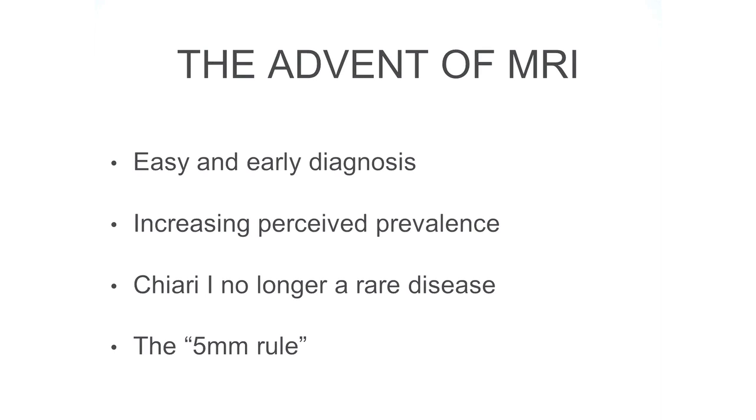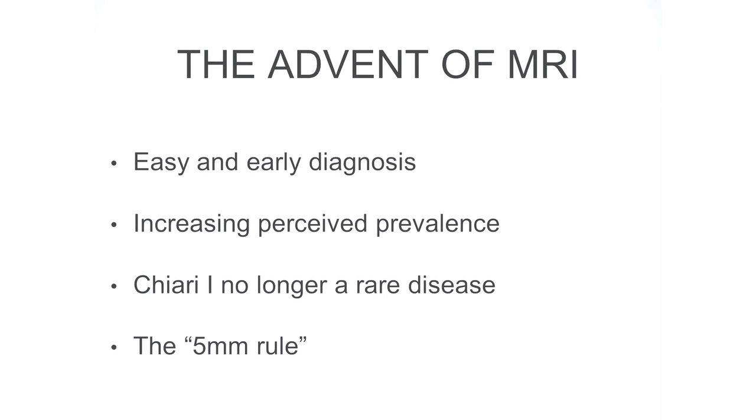With the MRI making Chiari I easy to see, radiologists were facing a flood of people with some degree of tonsillar herniation — when the tonsils pass through the hole at the base of the skull. They were seeing herniation of 3 cm, 2 cm, 1 cm, down to a few millimeters. At some point radiologists decided that 5 mm was the rule beyond which you called it Chiari and above which it was just a variant of normal. This rule was arbitrary — we still do not know who first decided it.